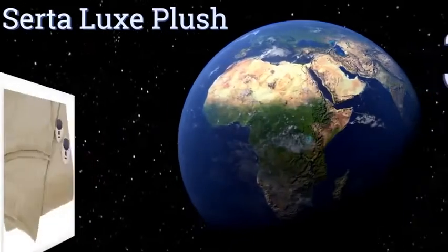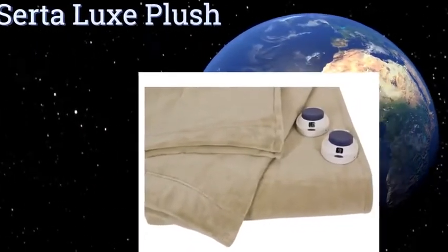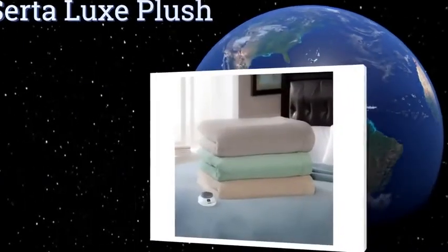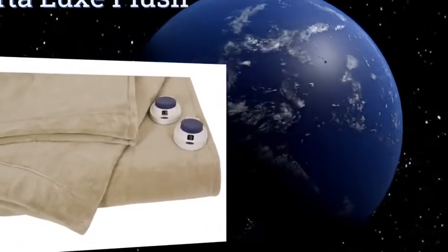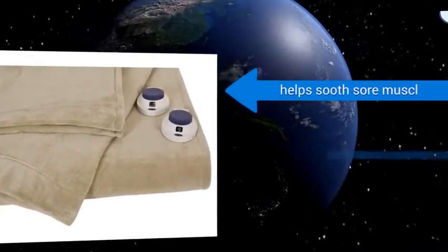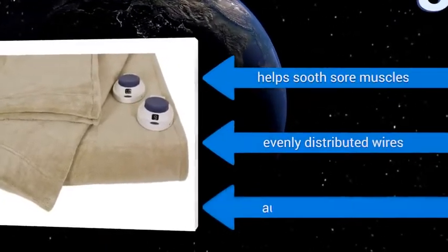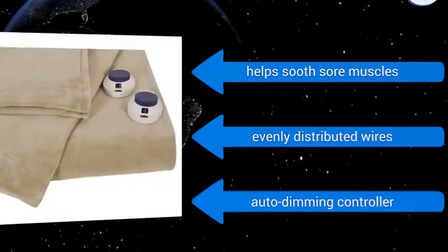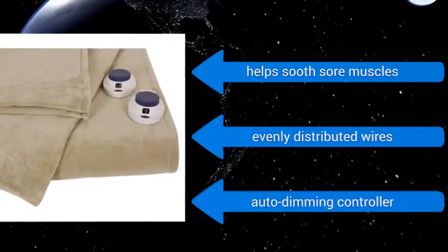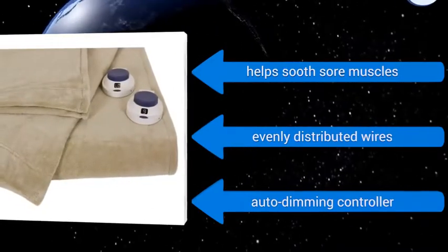Nearing the top of our list at number three, the Serta Luxe Plush may be expensive, but its incredibly soft and luxurious material feels super smooth against the skin and will keep you warm whether the heater is on or off. It also has a convenient preheat and hold function to warm up your bed before climbing in. It helps to soothe sore muscles, has evenly distributed wires, and comes with an auto-dimming controller.